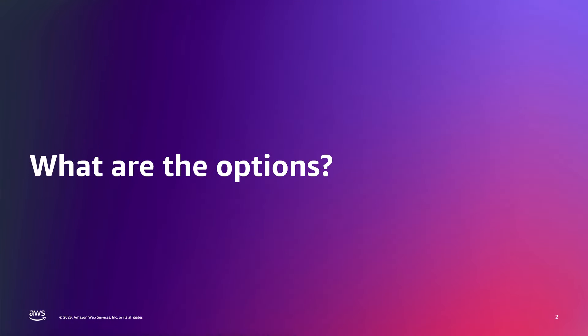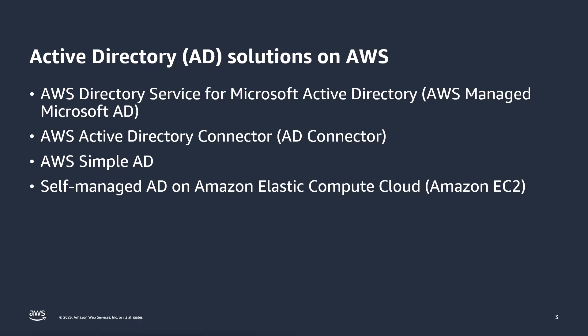So what are your options to run Active Directory on AWS? The options include AWS Directory Service for Microsoft Active Directory, otherwise known as AWS Managed Microsoft AD; AWS Active Directory Connector, otherwise known as AD Connector; AWS Simple AD; and Self-Managed AD running on Amazon Elastic Compute Cloud, otherwise known as Amazon EC2.